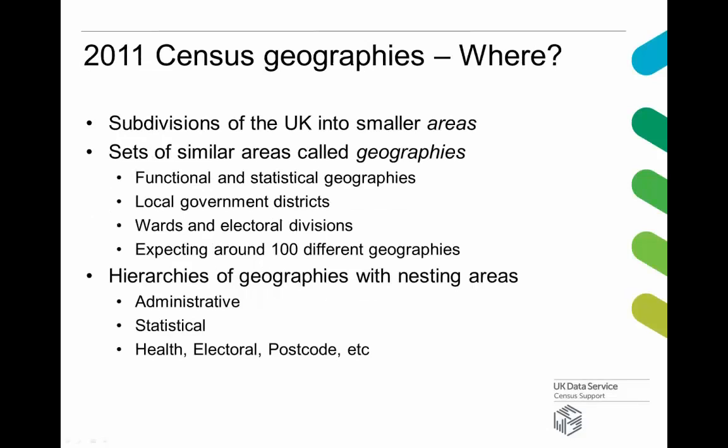So that's the 'what' of the census — the characteristics. I always think that the census tells us what it's like, where, and when. The 2011 geographies are the 'where' — they're the location. They really consist of subdivisions of the UK into smaller areas. At the top level you can get overall aggregate figures for the entire UK, and then for smaller areas within that.